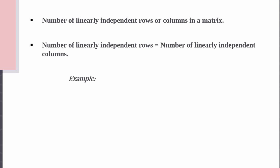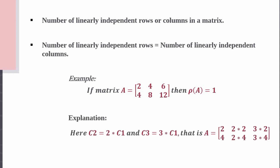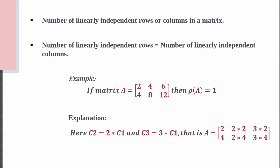Now we will consider an example. Here I am considering a Matrix A which has dimension 2 by 3. The rank of this matrix would be 1. Let me consider the columns first. The second column is two times the first column, and the third column is three times the first column. That means column 2 and column 3 are both linearly dependent columns, and column 1 is the only linearly independent column. Since we have only one linearly independent column, the rank of this Matrix is 1.